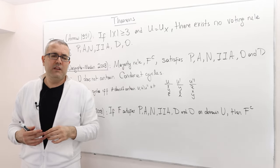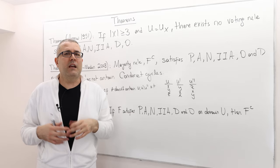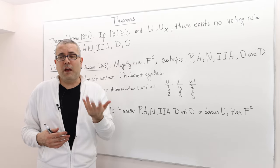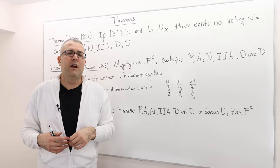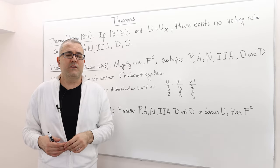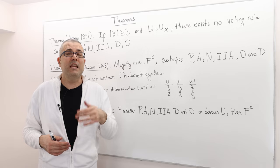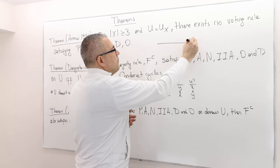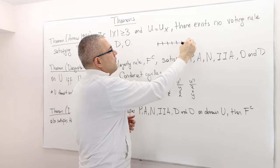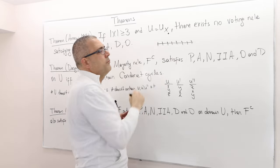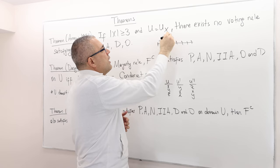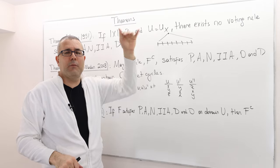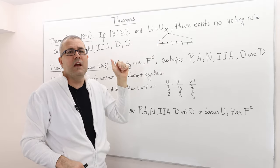I don't plan to talk about it in this course, but for example, there is a preference domain which is called single-peaked preferences. It basically says the agents can put the alternatives on some sort of order, and then they have one best first, and as they move away from this alternative, the other alternatives get worse and worse.